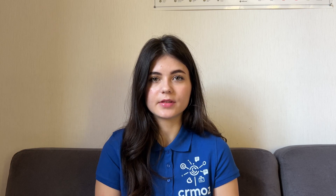While the main function of a CRM system is sales automation, I also want to talk about the marketing automation options in both systems. To get advanced marketing features you can integrate Sales Hub with Marketing Hub, but by default HubSpot CRM doesn't provide features such as marketing campaigns, marketing attribution, customer segmentation and AdWords integration.